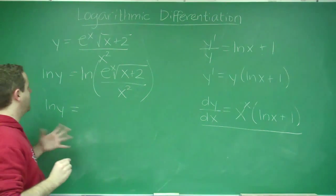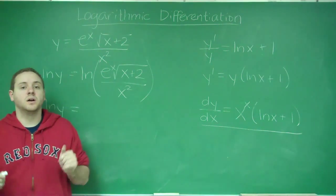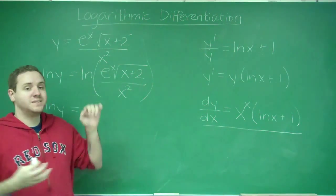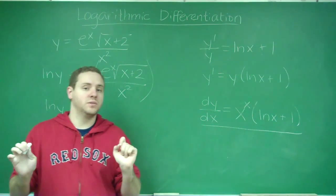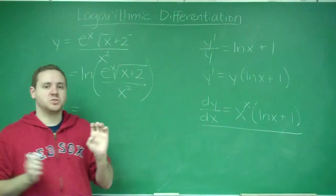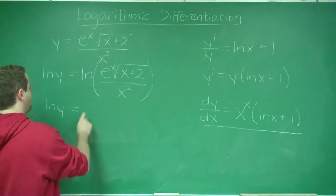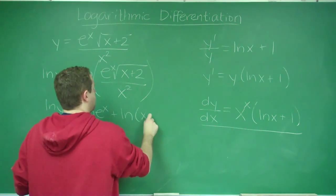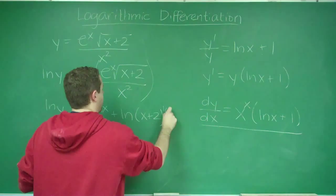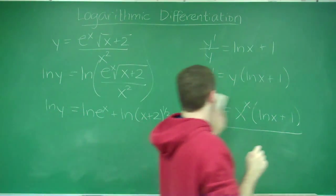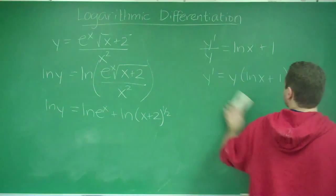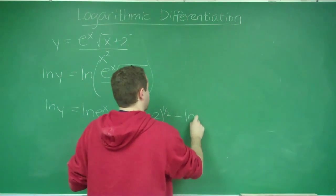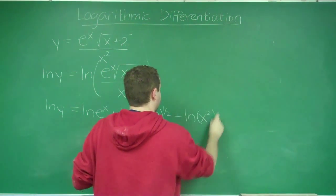You can see the reason that we wanted to do this is because if you have a natural log of a big product or quotient, that can always be split up. Remember that a product inside a log is the same thing as adding two different logs. A quotient inside a log is the same thing as subtracting. So this breaks down into ln e to the x plus ln, I'm going to write this square root instead as a half power, x plus 2 to the one-half. And then in our last term, since it's on the denominator, it's going to have to be subtracted, ln of x squared.